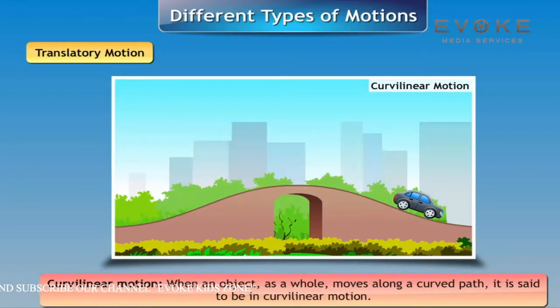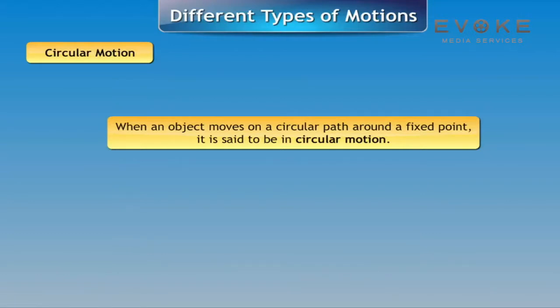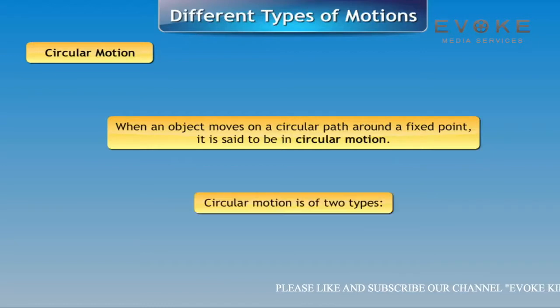Circular motion: When an object moves on a circular path around a fixed point, it is said to be in circular motion. Circular motion is of two types.